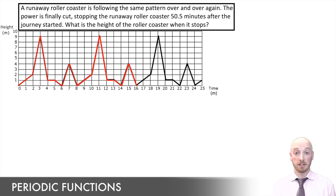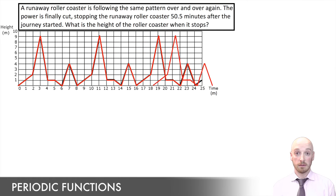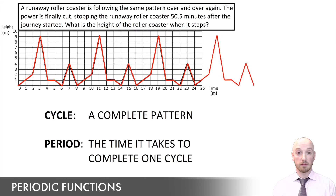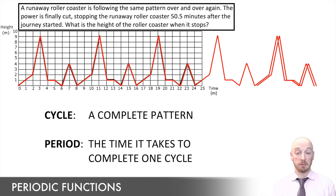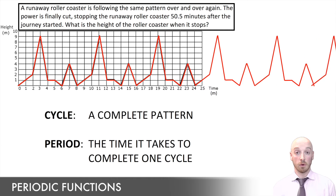As soon as one period ends, another one begins, repeating the same pattern of lines all over again. The cycle is just the pattern of lines that we see, and the period is the amount of time that it takes for one cycle to complete. Every cycle is going to be exactly the same as the very first one, so once you identify where the first cycle starts and ends, you know all the others are going to look exactly like that.